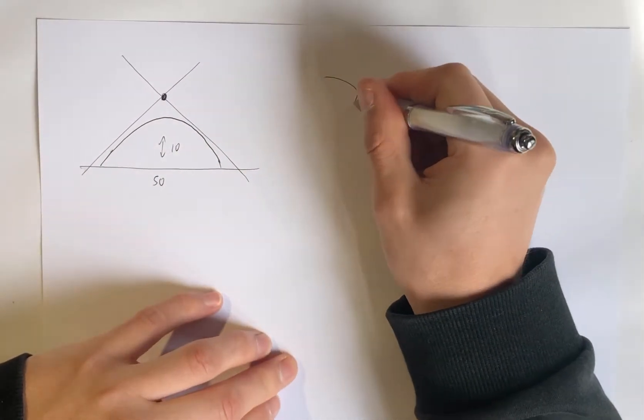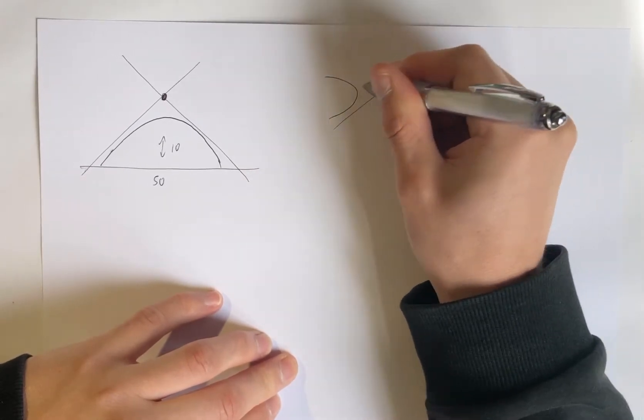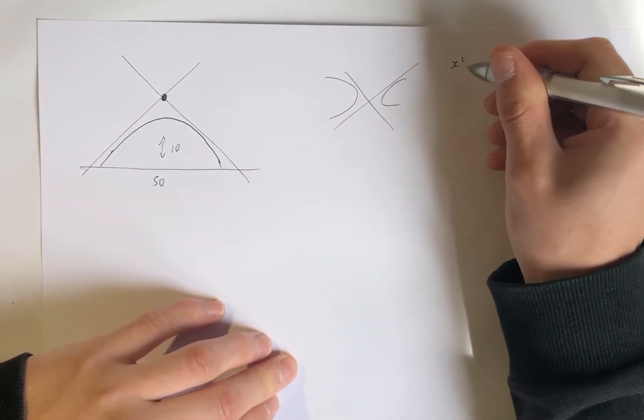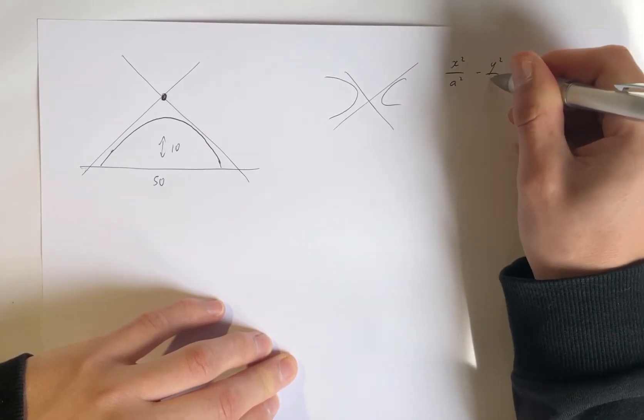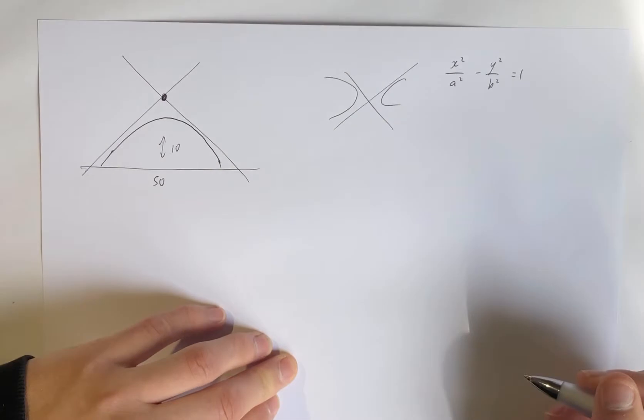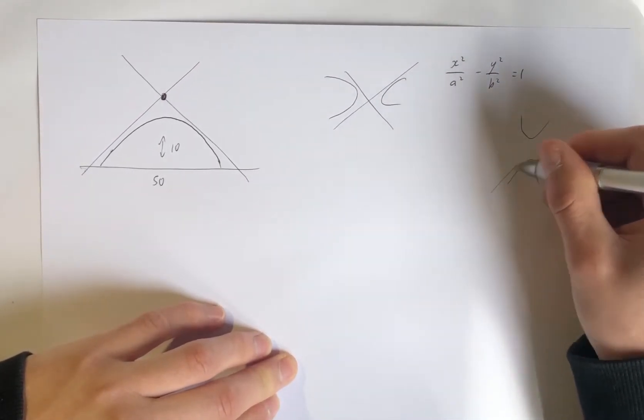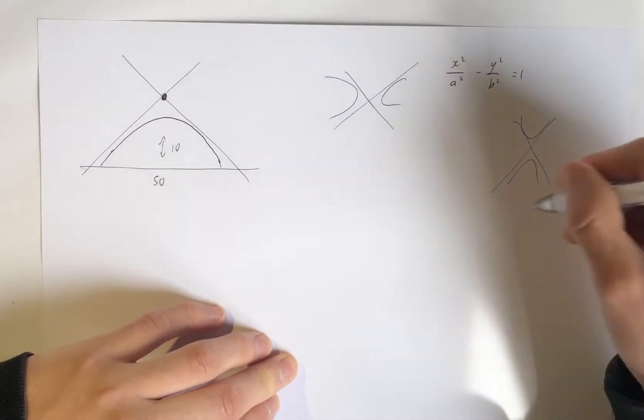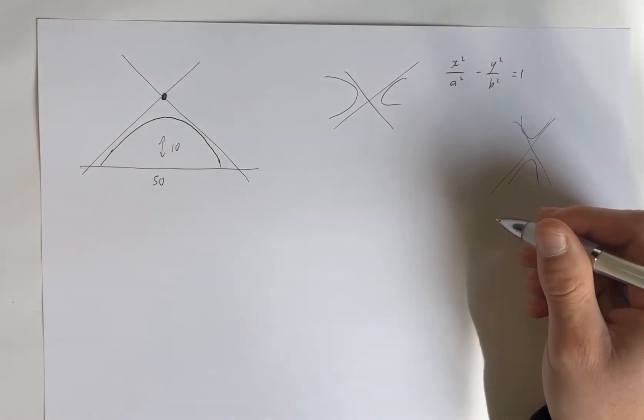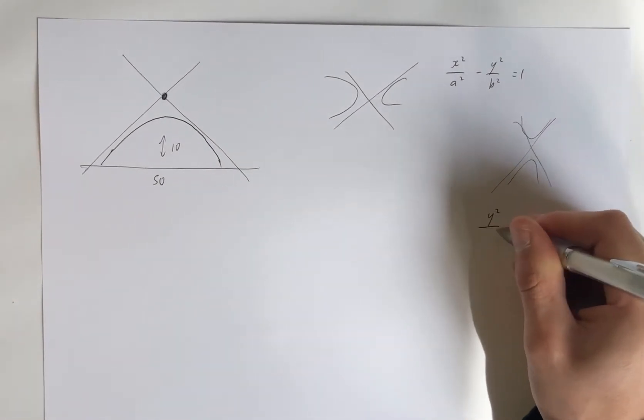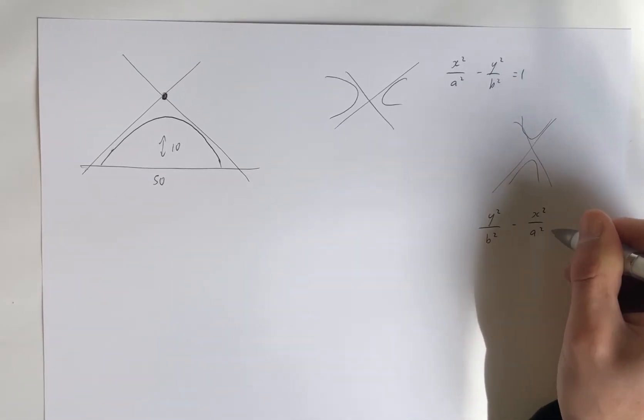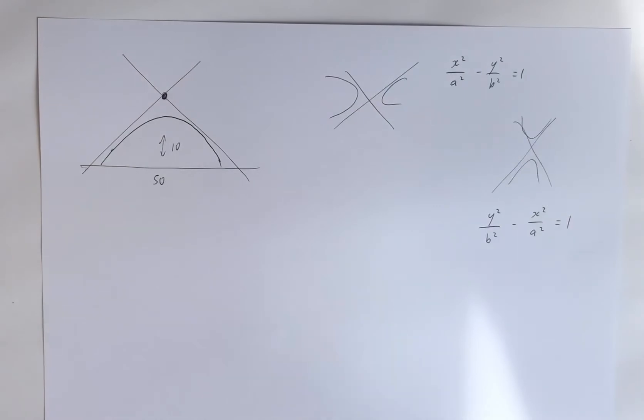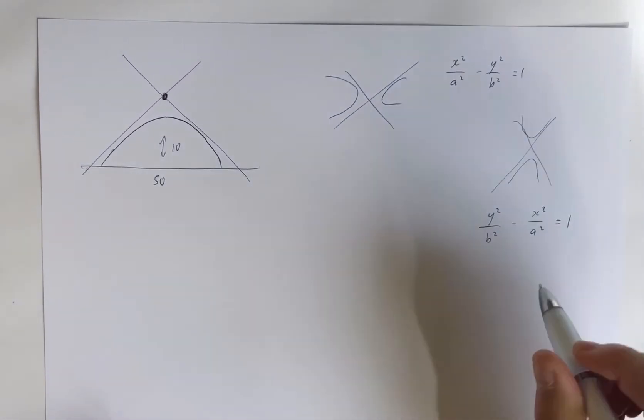So I'm just going to run you through. If we had hyperbolas going like this, then that's in the form x squared over a squared minus y squared over b squared is 1. If we have hyperbolas like this, going up this way, then we use y squared over b squared minus x squared over a squared equals 1.